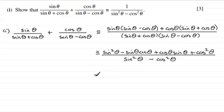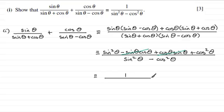The two middle terms cancel one another out, leaving sine squared theta plus cos squared theta on the numerator. This is a well-known identity — it equals 1. So our final answer is 1 divided by (sine squared theta minus cos squared theta), which is what we needed to show.